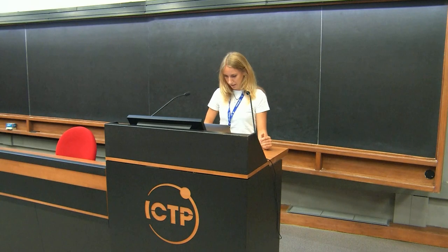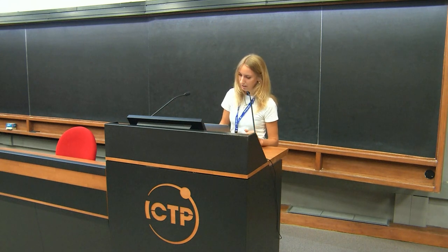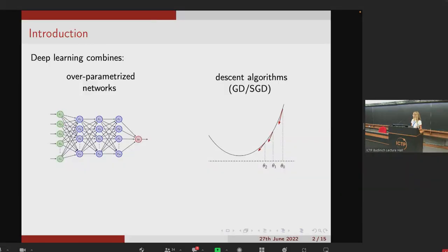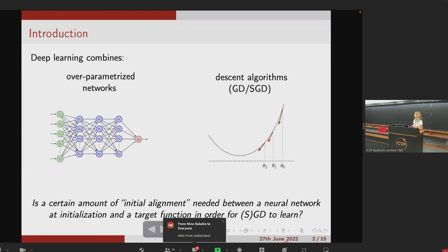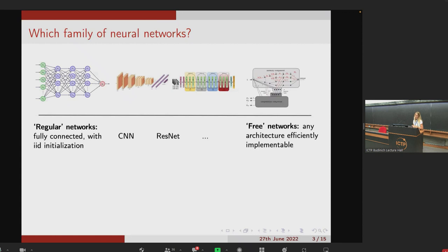Deep learning combines successfully over-parametrized networks with descent algorithms. In the framework of trying to understand how these two elements are combined, we pose the following question: do we need some knowledge of the target function in our neural network architecture in order to learn with gradient descent, or can gradient descent learn from any arbitrarily small initial alignment? The goal is to answer this question and also to quantify both the initial alignment and the learning accuracy.